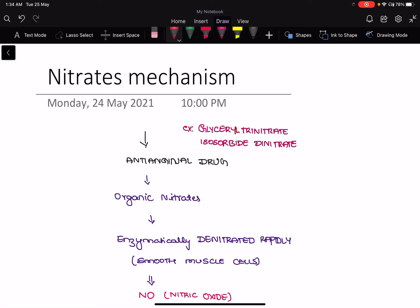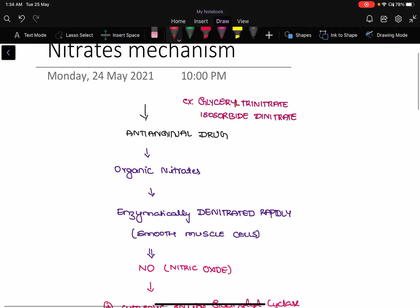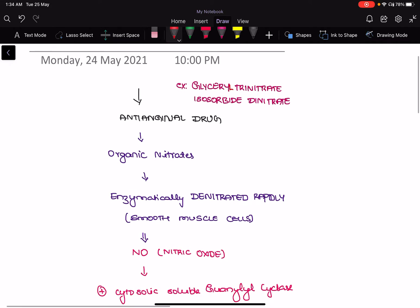Hi everyone, welcome to iLO Pharmacology. If you are not subscribed, please do subscribe to my channel. So let us learn about the nitrates mechanism in today's session. As you know, the most common nitrates used are glyceride trinitrate and isosorbide dinitrite.